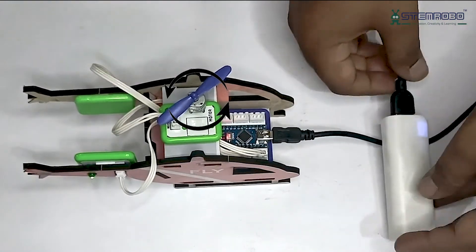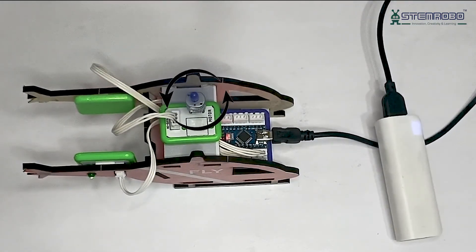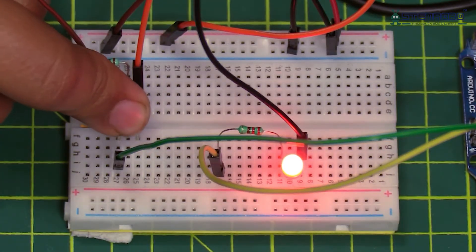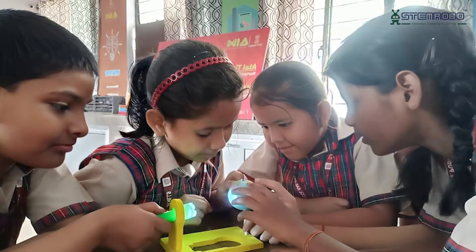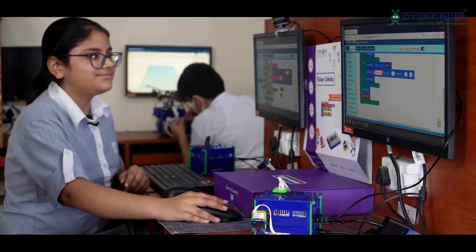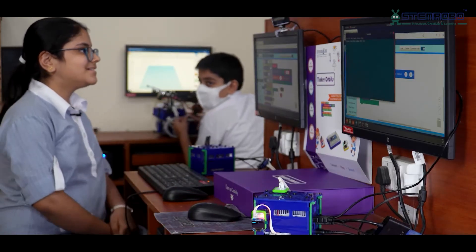Unlocking creativity and real-life application-based projects, STEM Robo's approach cultivates active innovators through a proprietary Consumer to Innovator to Creator (CIC) methodology, nurturing real-world skills.